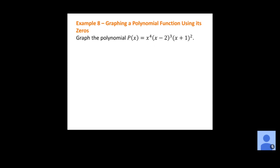All right, so Example 8 from section 3.2 — we want to graph this polynomial. We're going to try to sketch a basic graph of what this would look like using the information we've talked about throughout this section. So what's one of the first things we might want to look for if we're going to try to sketch this graph?